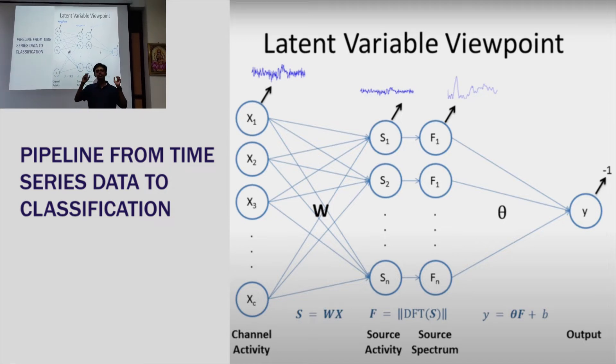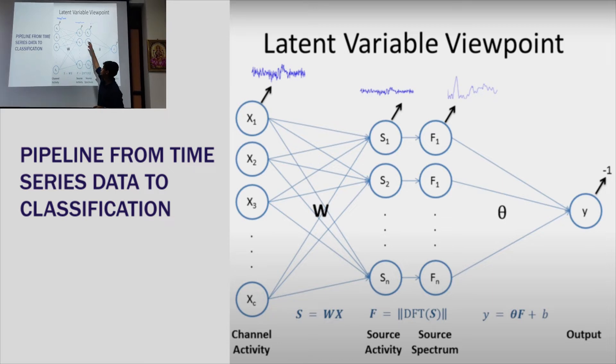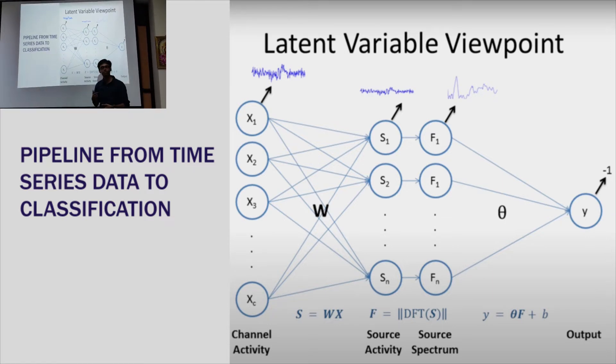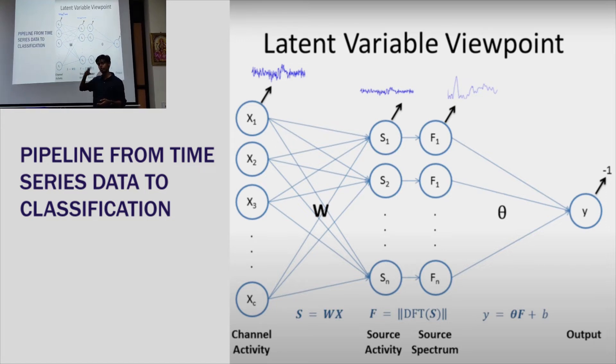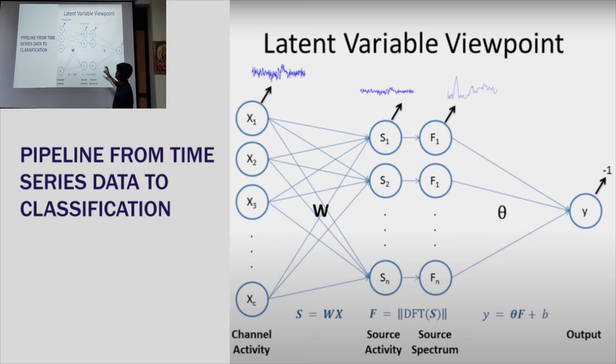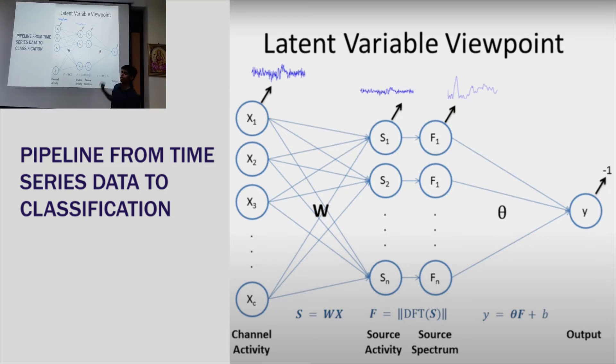So essentially what is happening is a simple linear multiplication of weights on the channel data to give us something called source activity. So source activity is just what parts of the brain are projecting some sort of electrical signal on what channels. So you multiply that by some weight and you get these and you compute the magnitude of the DFTs to get the features to the linear discriminant analysis classifier. So we are using the top six maximally informative features after spatially filtering into the LDA problem which is just a linear combination of its features to give the classifier output.